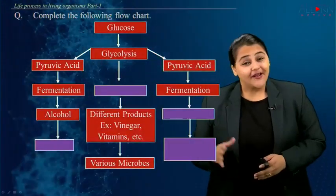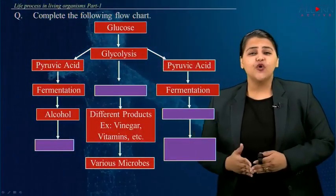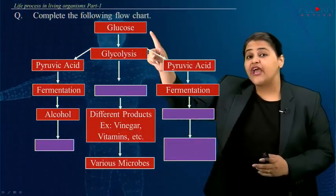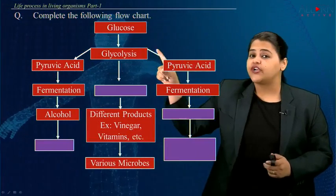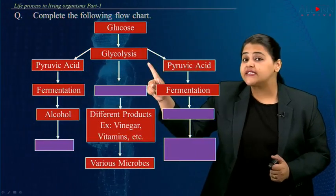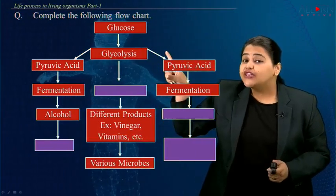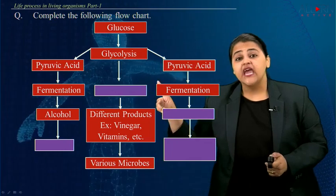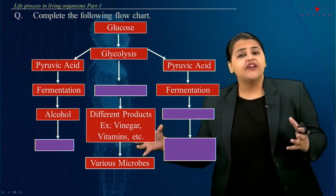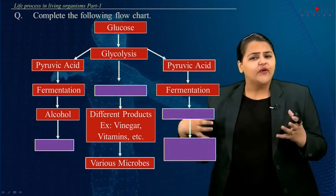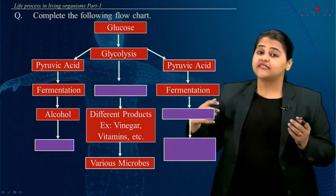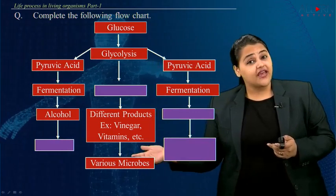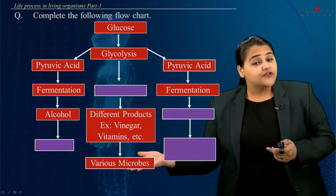Let's look at this flow chart and try to complete it. We have glucose which undergoes glycolysis. This glycolysis will form different products, for example vinegar, vitamins, etc., and various microbes will be doing this process.